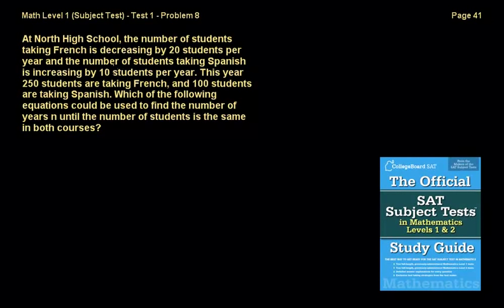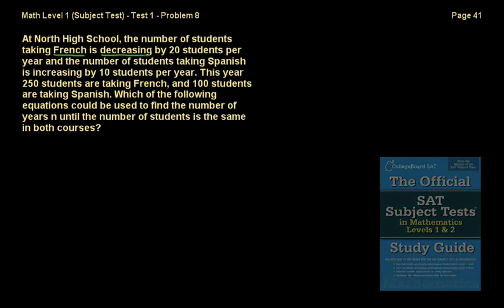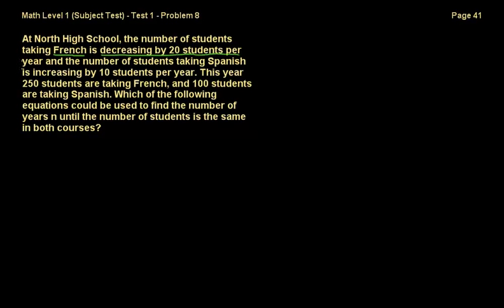Welcome back everybody. We're now in problem 8, and it asks: at North High School, the number of students taking French is decreasing by 20 students per year, and the number of students taking Spanish is increasing by 10 students per year. So this year 250 students are taking French and 100 students are taking Spanish. Which of the following equations could be used to find the number of years until the number of students is the same in both courses?